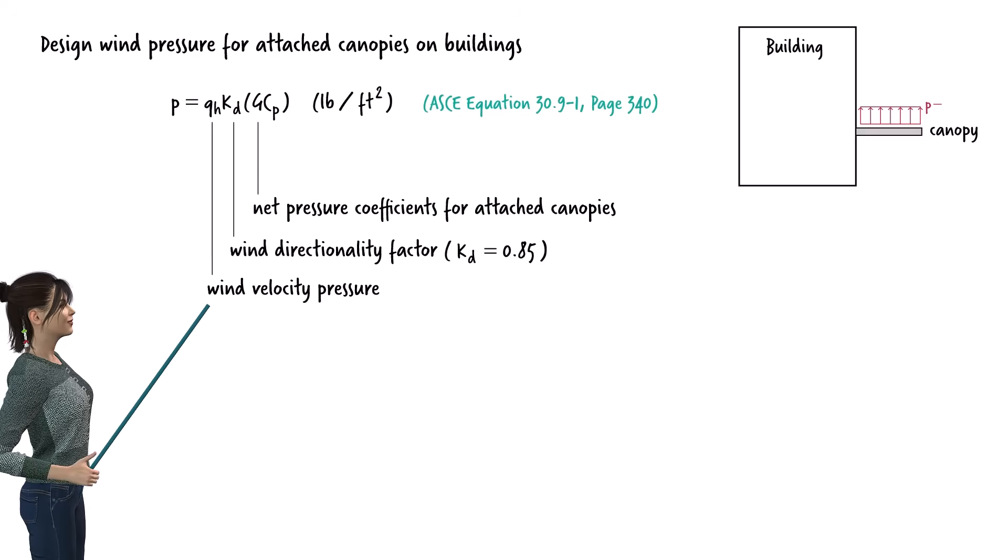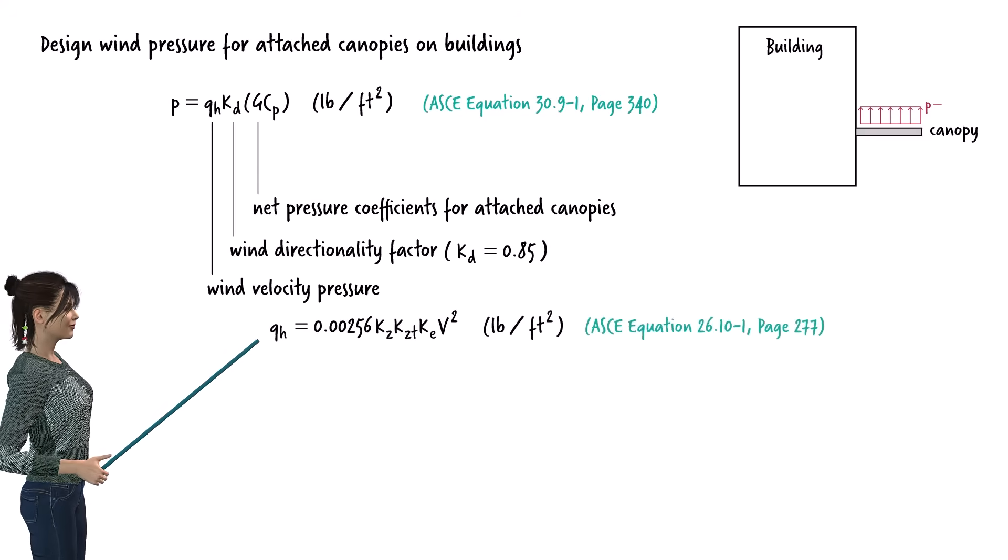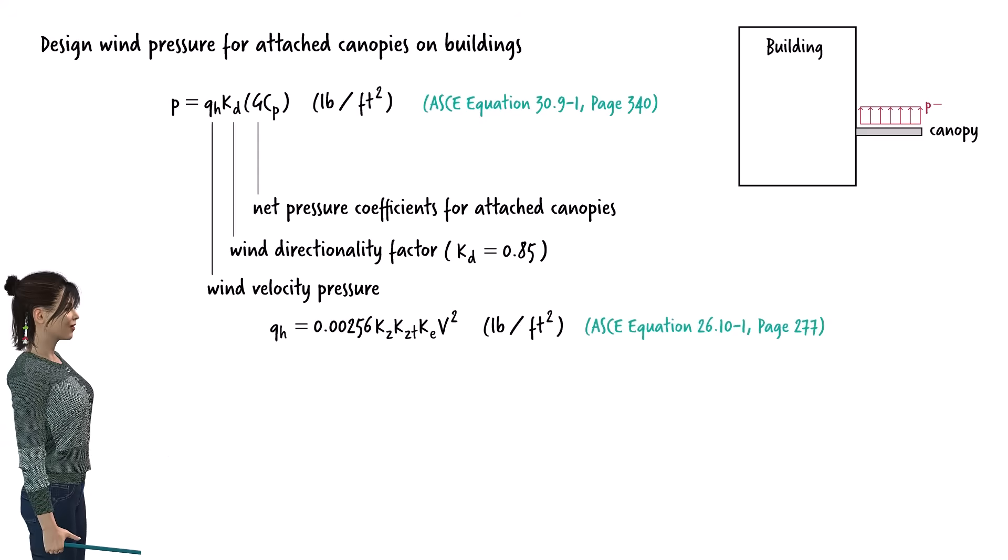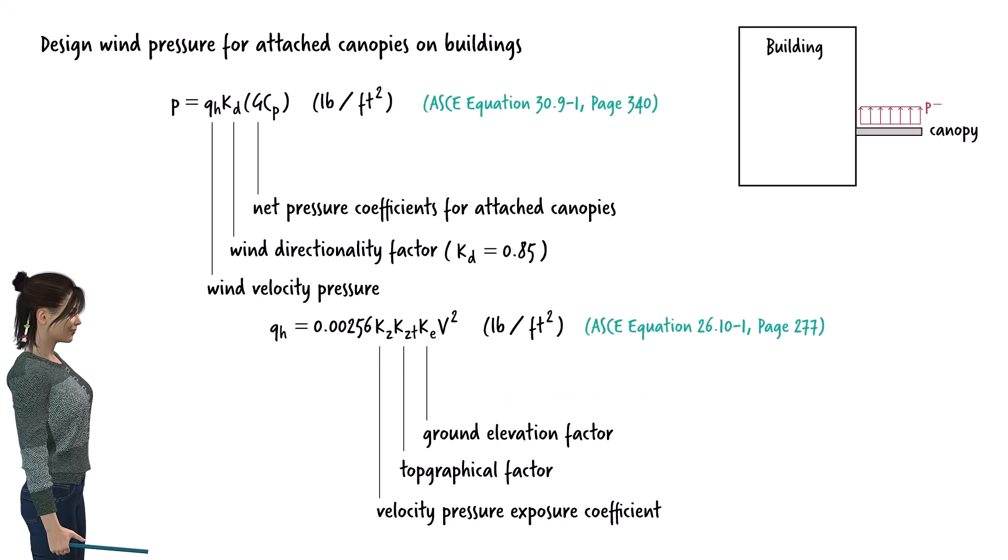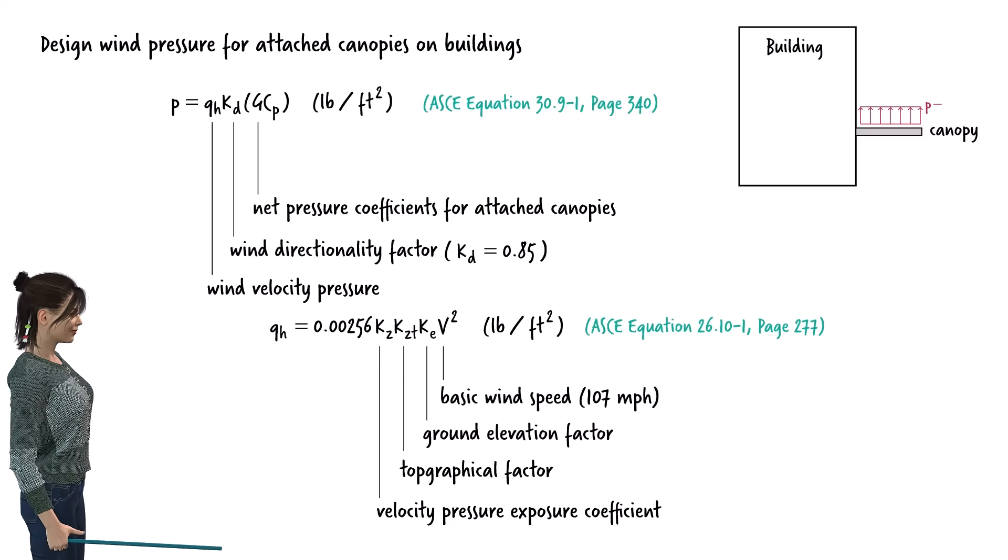The wind velocity pressure can be found in ASCE equation 26.10-1. The equation is defined in terms of velocity pressure exposure coefficient, topographical factor, ground elevation factor, and the basic wind speed, which we determine to be 107 miles per hour.